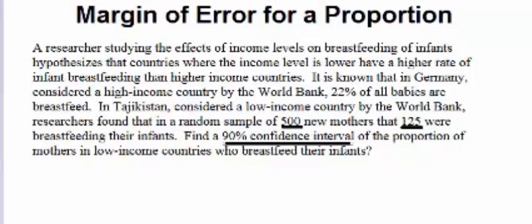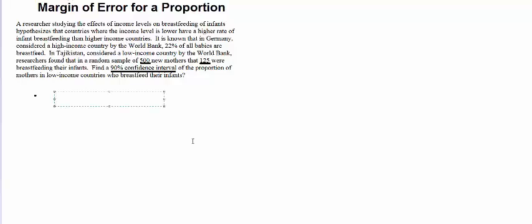So, some new terms for us to discuss. The first one is going to be x, the number of successes in our study. So a success would be breastfeeding your baby and 125 people breastfed, 125 mothers breastfed. N is our sample size. That's going to be 500.